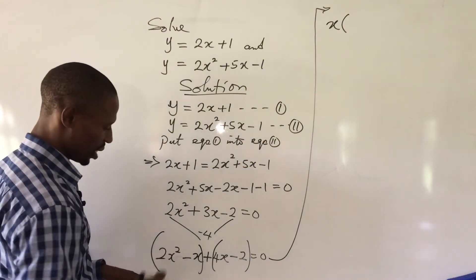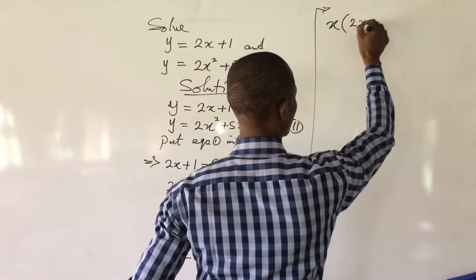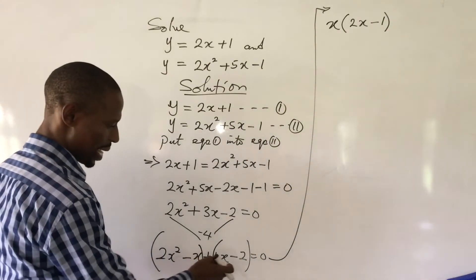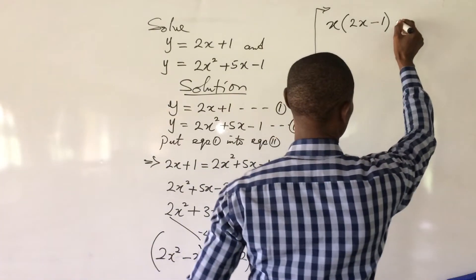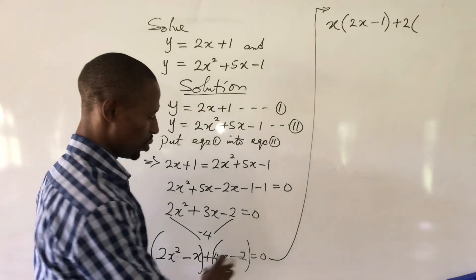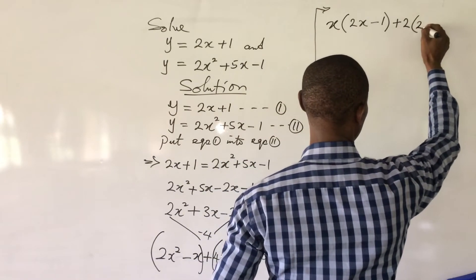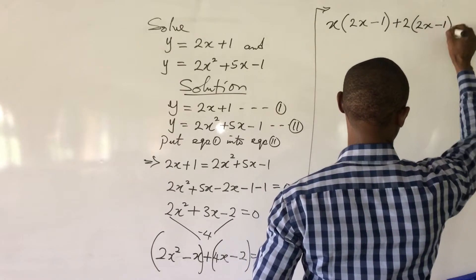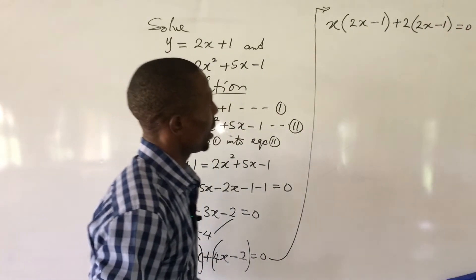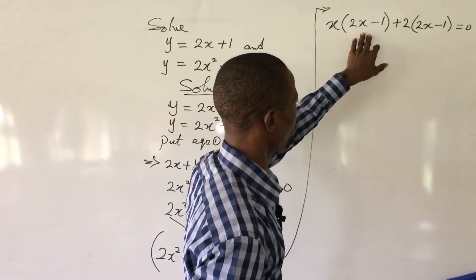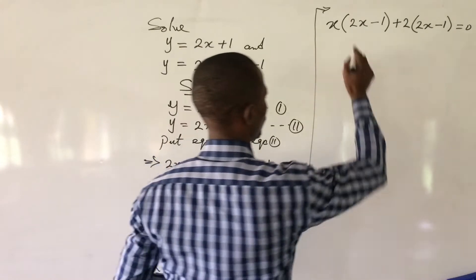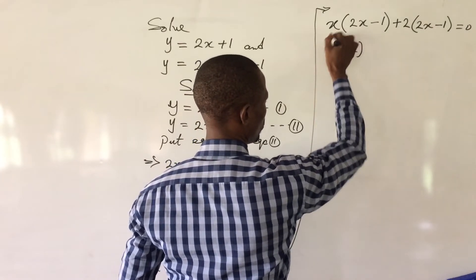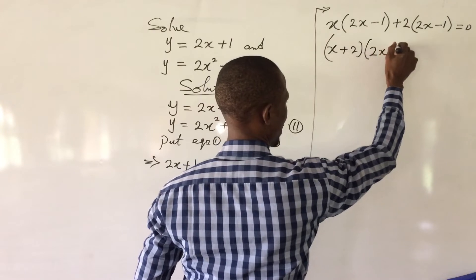We factorize x out: x(2x minus 1). Then what is common to the second bracket is 2, so we bring out 2: plus 2(2x minus 1), equal to 0. At this point we have the same bracket in both terms, so we take it out. This gives us (x plus 2)(2x minus 1) equal to 0.